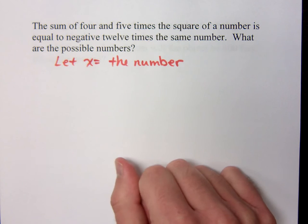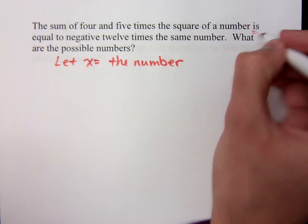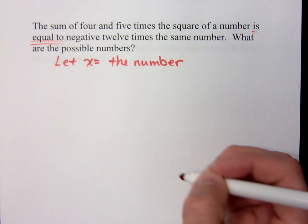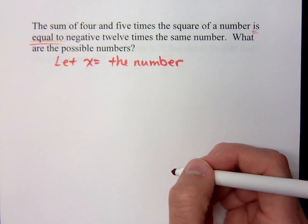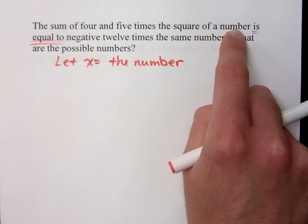Now as you read this, it tells you exactly how to set things up. One of the first things you want to see is the 'is equal to' tells you where your equal sign is going to go. Before the equal sign, we see the sum of 4 and 5 times the square of a number.